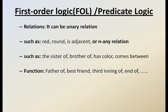What are the various kinds of relationships? It can be a unary relationship like red, round, or is-adjacent, or an n-ary relationship such as sister-of, brother-of, has-color, comes-between. Other kinds of functions include father-of, best-friend, third-inning-of, end-of. Like that, unary, n-ary, and a set of functions can be represented in predicate logic.